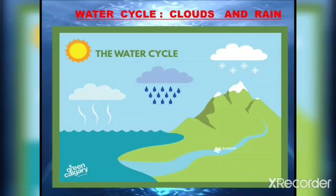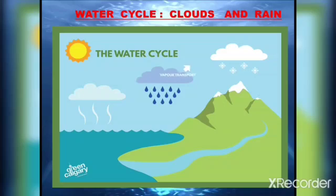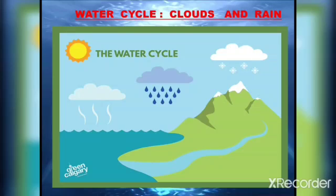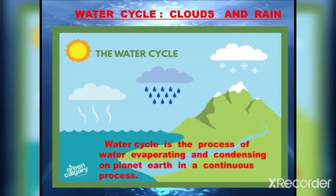Water cycle: in nature, water keeps on changing its form. Water evaporates from the oceans, rivers, lakes, and ponds by the heat of the sun, and the water vapor formed moves upwards. When water vapor goes very high in the sky, it comes in contact with cold air and cools down to form drops of water. The tiny drops come close to each other and form clouds. As the clouds cool further, the tiny drops become large and heavy and fall as rain. The rain water then flows to ponds, lakes, rivers, and finally to the sea, completing the cycle. This cycle is called the water cycle — the process of water evaporating and condensing on planet Earth in a continuous process.